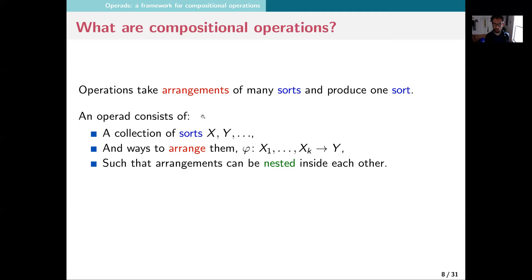These arrangements can be nested, and that's what operations are for. When you think about plus and times, there's only one sort — real numbers — and you're going to add, subtract, multiply, and divide them. There's all sorts of arrangements: five plus nine minus six times four, and different arrangements still give you another number out. The nesting is what we mean by compositionality — the fact that you can nest them and keep making pictures of pictures of pictures.